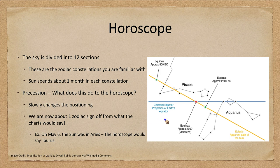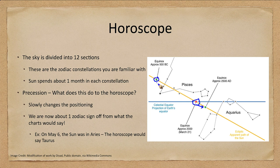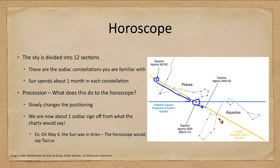Here we see how the equinox is moving. Around the year 2000, the vernal equinox is at one position, and by 2500 it will have shifted noticeably. In 500 BC it was on the other side of Pisces — meaning in 1500 years the vernal equinox changed by a significant amount. This is where the equinox was 2500 years ago, and in another 500 years it will be heading into the constellation of Aquarius, making the zodiac signs even further off as time goes on.